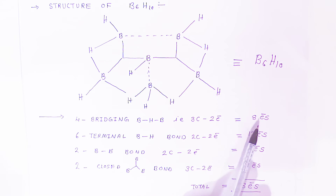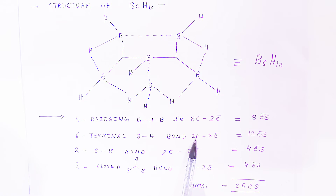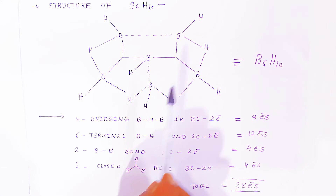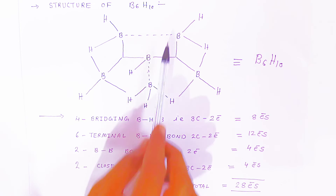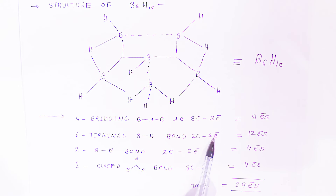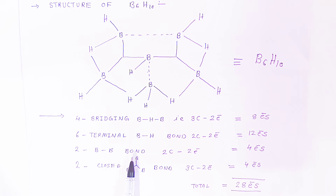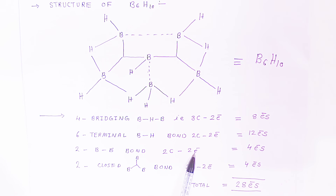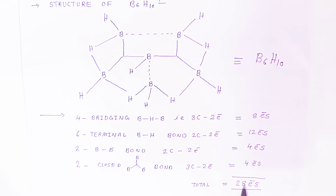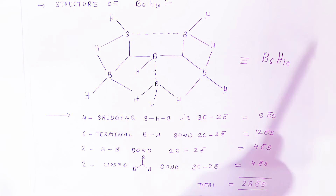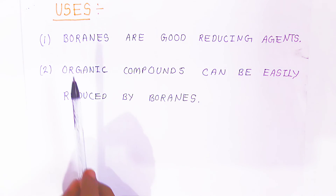In B₆H₁₀, there are six terminal B–H bonds (2c-2e) carrying 12 electrons, two boron-boron bonds (2c-2e) carrying 4 electrons, and two closed boron-boron-boron bonds (3c-2e) carrying 4 electrons. Adding all: 8 + 12 + 4 + 4 = 28 electrons, confirming the valence electron count for hexaborane B₆H₁₀.